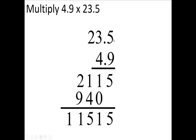Okay, now this has one decimal right here. There's one decimal right here. That's a total of two decimals. So we need to start right here and move over how many places? 1, 2. The decimal should go right here. Okay, so my answer is 115 and 15 hundredths.